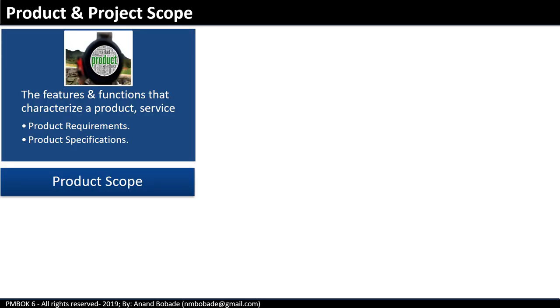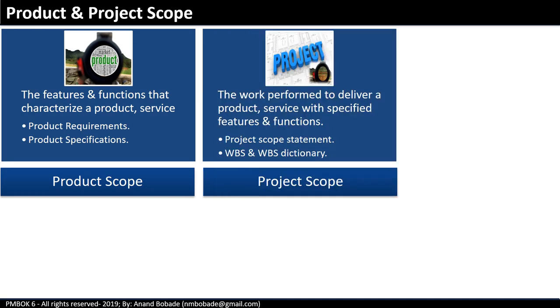There is often confusion between product scope and project scope. Product scope includes the features and functions that characterize a product or service. They are generally referred to as product requirement documents or product specification documents. Project scope is the work performed to deliver that product or service with the specified features and functions as per the product scope. They are referred to as the project scope statement, WBS, and WBS dictionary.